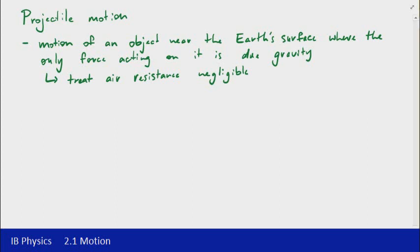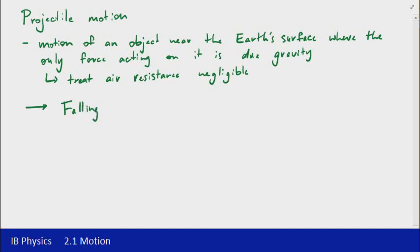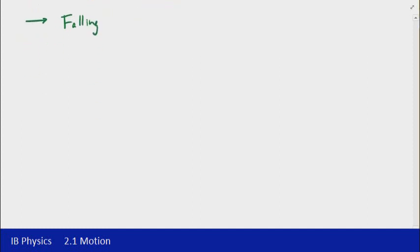So with projectile motion, there are a few subcategories that we're going to look at. And the first one is just falling. I'll make a note for each of these subcategories as well. The first point to note is that near the Earth's surface, and this point is probably not just about falling, but applies to all.